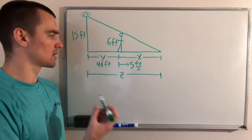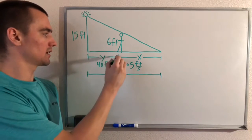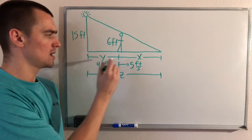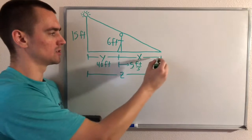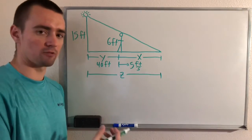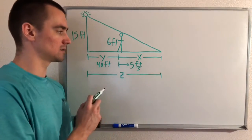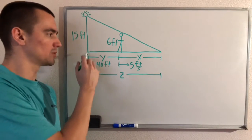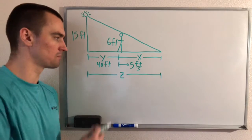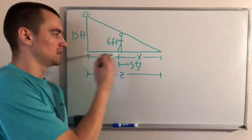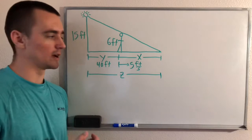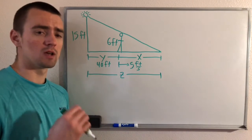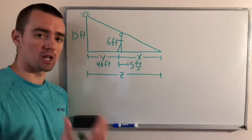I also added a couple of other things: labeling the side length from the pole to the man as Y, the distance from the man to the tip of his shadow — which represents the length of his shadow — as X, and the entire distance from the pole all the way to the tip of his shadow as Z.